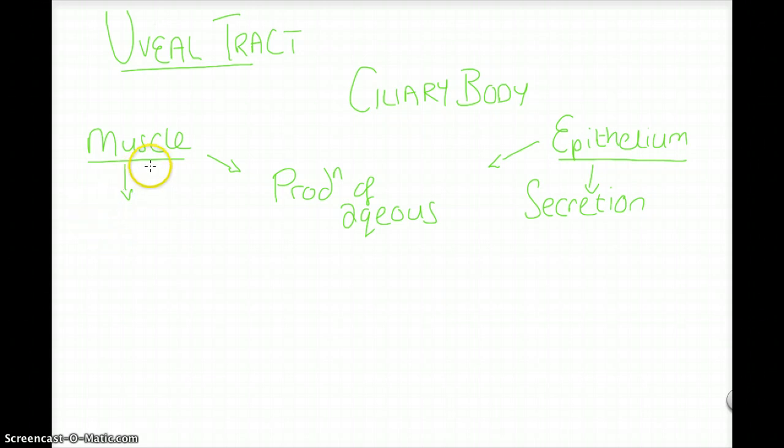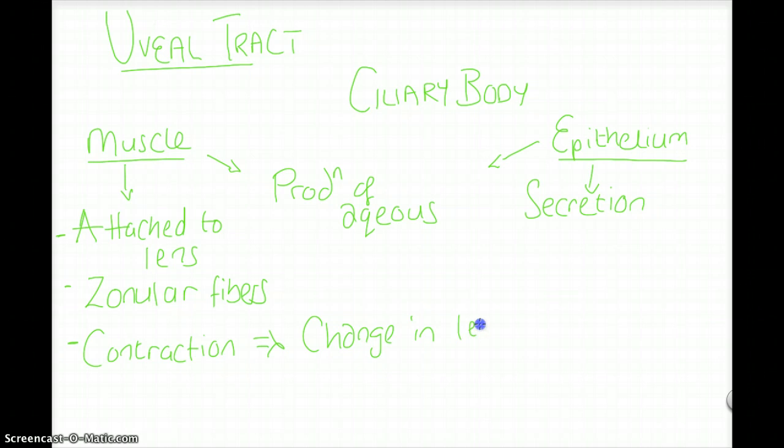The ciliary muscle is attached to the lens via the zonules or zonular fibers. The contraction of the ciliary muscle leads to a change in the shape of the lens, and this is the accommodation reflex.